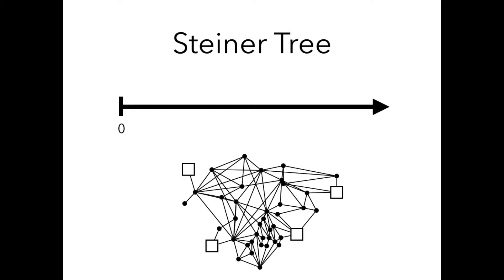In the Steiner tree problem we are given a graph and a set of terminals, denoted here on this picture with squares. The goal is to find a tree connecting these squares and we want to minimize the cost of this tree. We want to find the optimum solution.